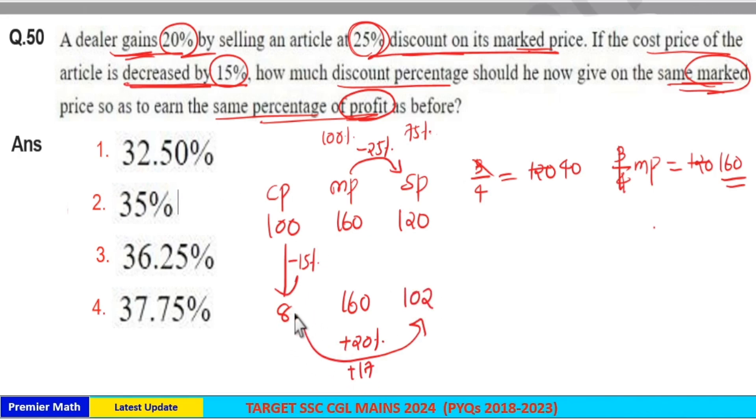So when you give 20% profit on this 85 rupees cost price, you will get 102 rupees as selling price, which means here discount is equal to...